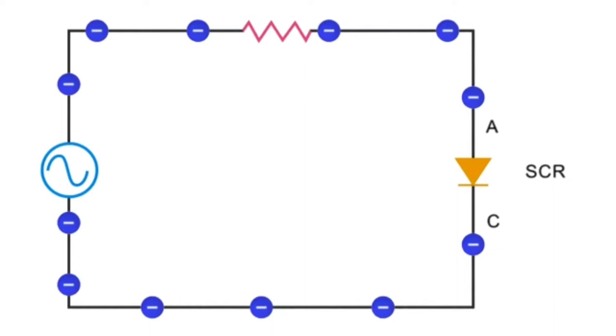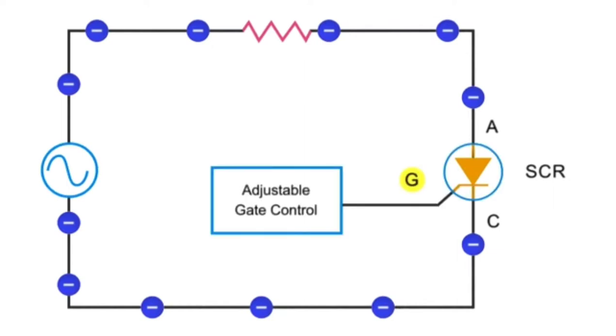This is accomplished by manipulation of the adjustable gate control. This gate control function determines when and how much the SCR conducts.